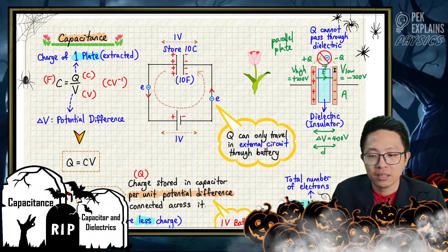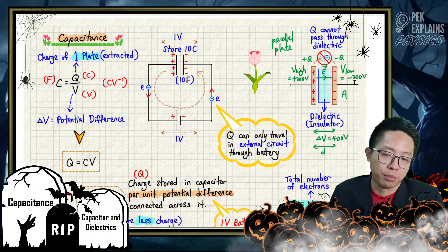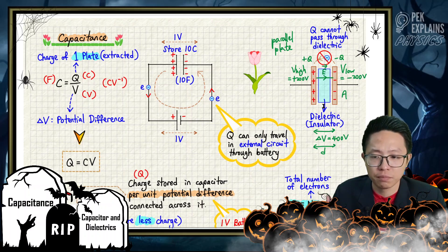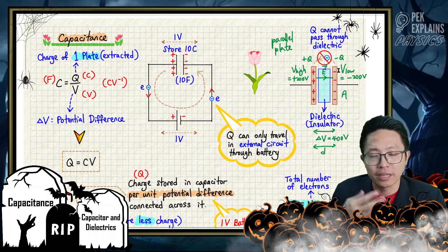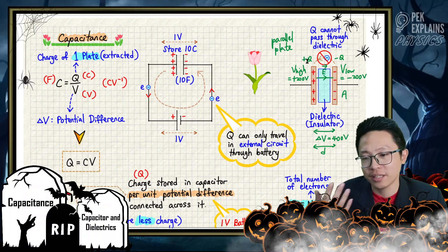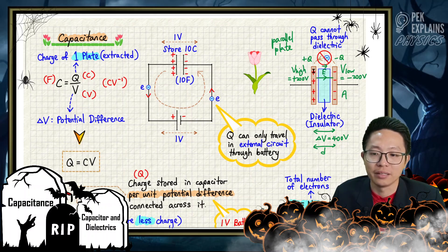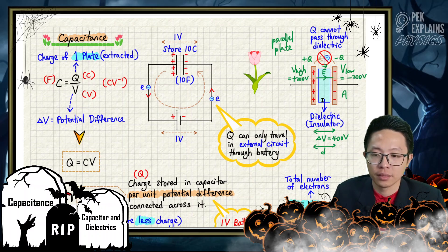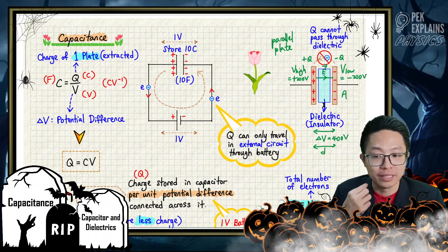If the electron can jump over to the other plate, the capacitor is short-circuited and gets neutralized. It cannot build up the potential difference of 400 volts; it cannot maintain a positive plate and a negative plate because it cannot store charge. So in between the two plates, there must be separation, and we put a dielectric as an insulator.